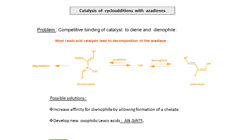So possible solutions: we thought we could increase the affinity of the catalyst by using a dienophile which can lead to a chelate, making it competitive with nitrogen complexation, or we could develop new oxophilic Lewis acids. That's another long talk because it's totally new chemistry, but you can read some of our publications on that.